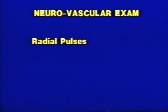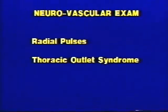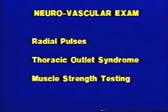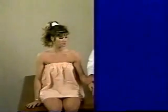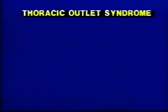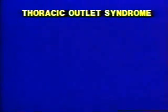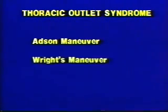The neurovascular exam is a cursory exam which includes radial pulses, test for thoracic outlet syndrome, and muscle strength testing of both upper extremities. The radial pulse is palpated and compared to the opposite extremity. The vascular exam includes provocative tests to evaluate vascular compression in the thoracic outlet. Keep in mind, the reliability of these tests is low: Adson maneuver and Wright's maneuver.